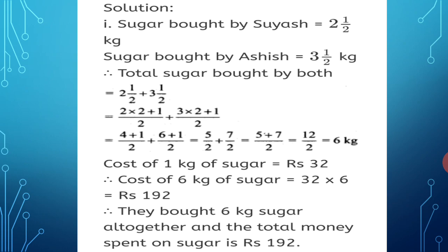Second part: cost of 1 kg of sugar is Rs. 32. Therefore, cost of 6 kg of sugar = 6 × 32 = Rs. 192. Final answer: they bought 6 kg of sugar altogether and the total money spent is Rs. 192.